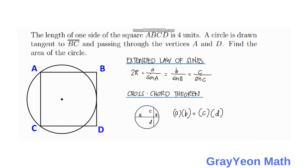We will solve this problem using two methods: the extended law of sines and the cross-chord theorem. The extended law of sines states that two times the radius of the circle equals the side of the triangle inscribed in a circle over the sine of the opposite angle. The cross-chord theorem states that for two chords that intersect, the products of their segments are equal.